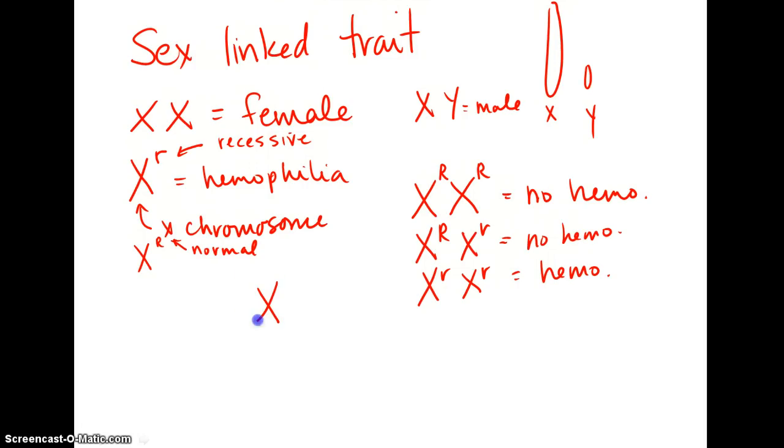A female can also be little r, little r—we keep that X there because it's a sex-linked trait. In this case, this female does have hemophilia. Now with males, this is the important part. Remember, males are XY and sex-linked traits are only carried on the X chromosome—it is not carried on the Y. So a male can be big R with Y containing nothing, which means this is a normal child. There's another version where it's little r on the X with the Y, and this individual does have hemophilia. It cannot have an R on the Y because the Y doesn't have that gene, doesn't have that piece of DNA in it.